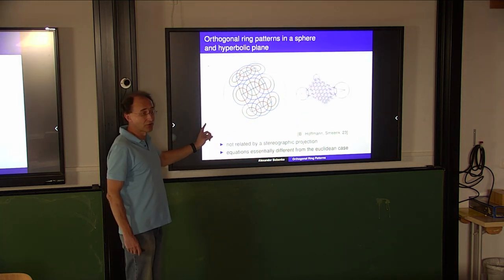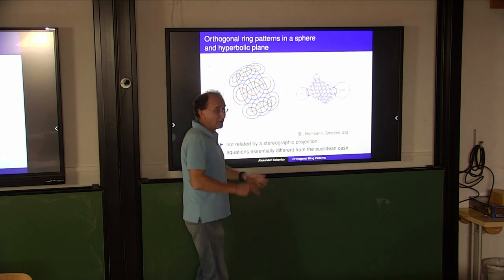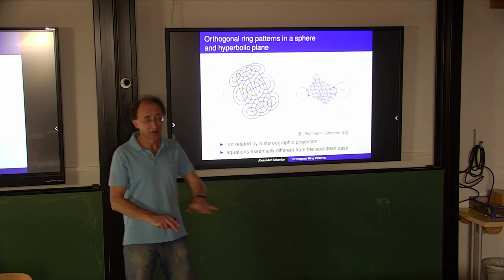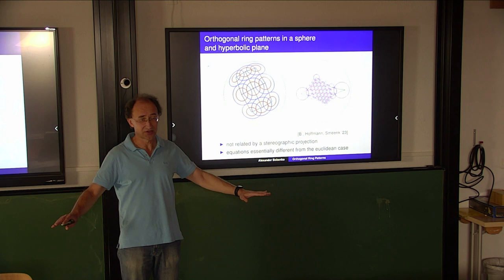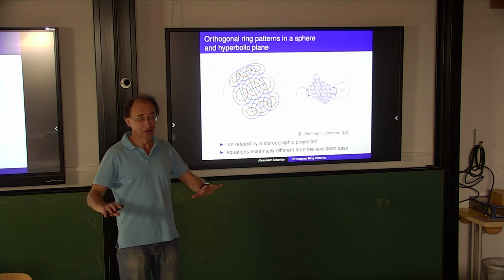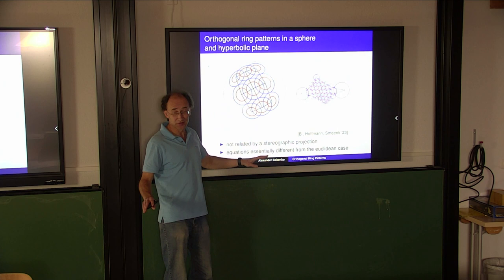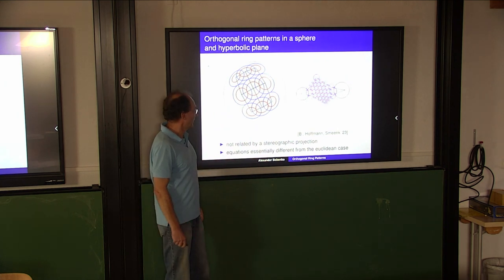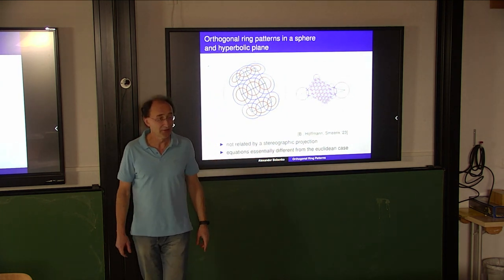What is the difference from circle patterns? If you have a circle pattern on the sphere, you can project it stereographically to the plane, and it will again be a circle pattern with the same intersection angles - no difference. Here, if you have ring patterns, this doesn't work. Therefore, equations are essentially different from the Euclidean case. There will again be a relation to integrable systems.